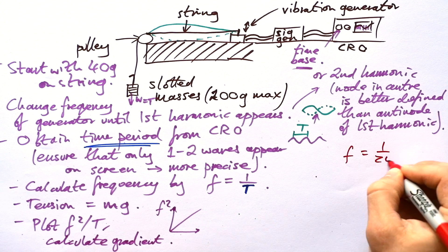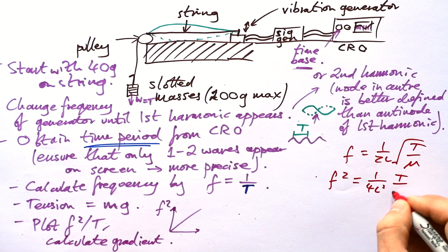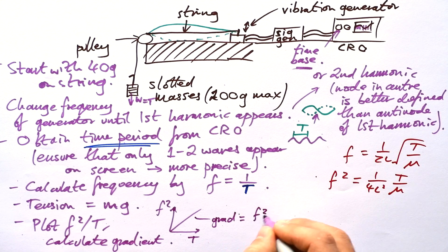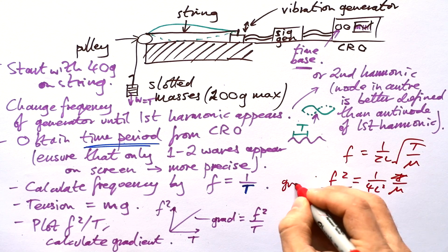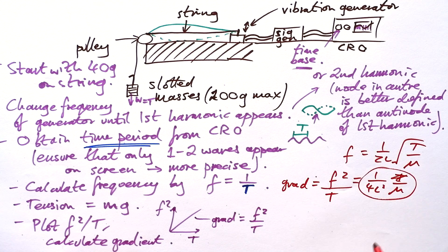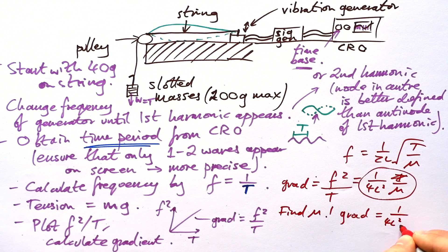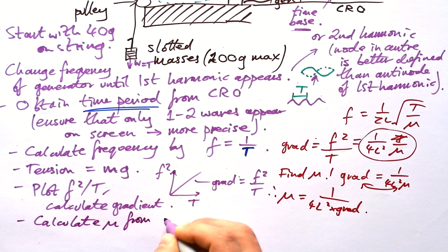Let's look at the equation again: F equals one over two L times the square root of T over mu. If we square the whole thing, we get F squared equals one over four L squared times T over mu. The gradient of our F squared versus T graph equals F squared divided by T, which equals one over four L squared mu. If you used the second harmonic, just halve the frequency before plotting. To find mu: mu equals one divided by four L squared times the gradient, provided you measure the length of string with a ruler.